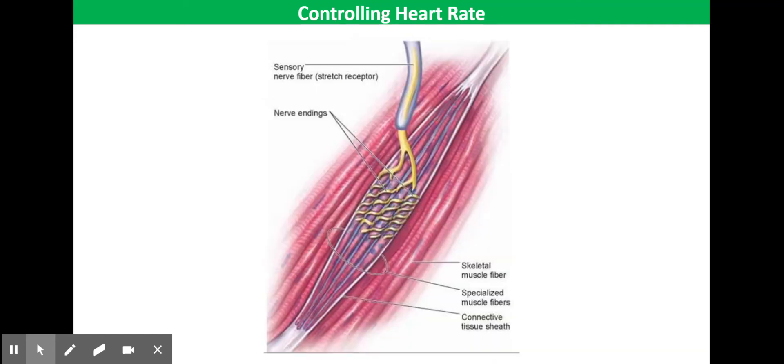So the first that we'll look at is the stretch receptors. Stretch receptors in muscles detected from movement in the limbs can send impulses to the cardiovascular centre, informing the cardiovascular centre that extra oxygen is needed. And then that would end up resulting in an increase in heart rate.